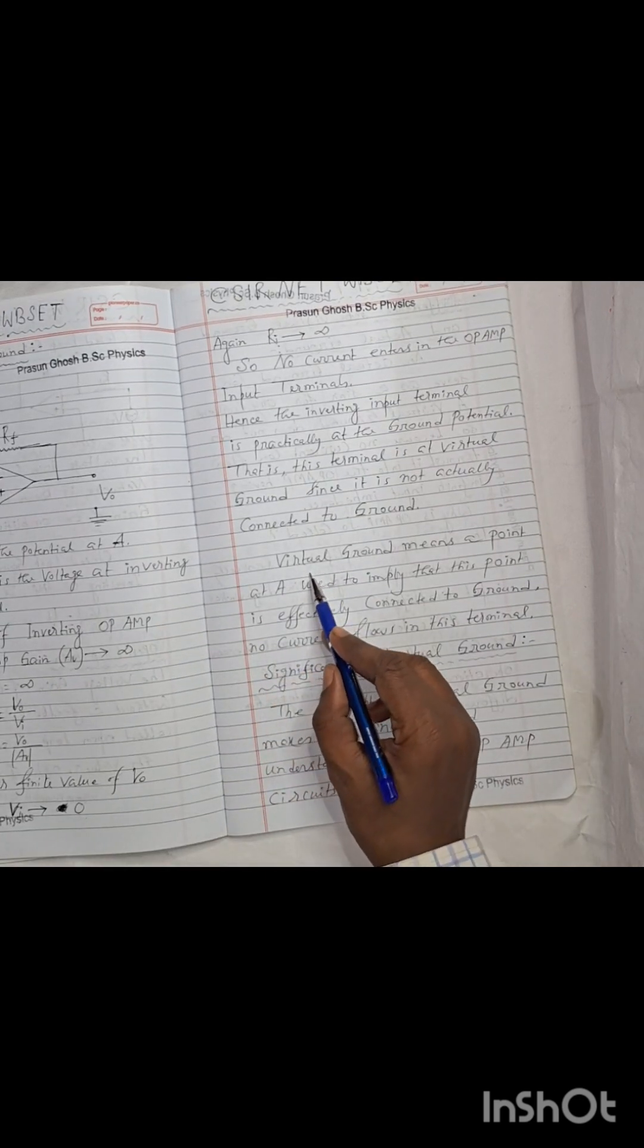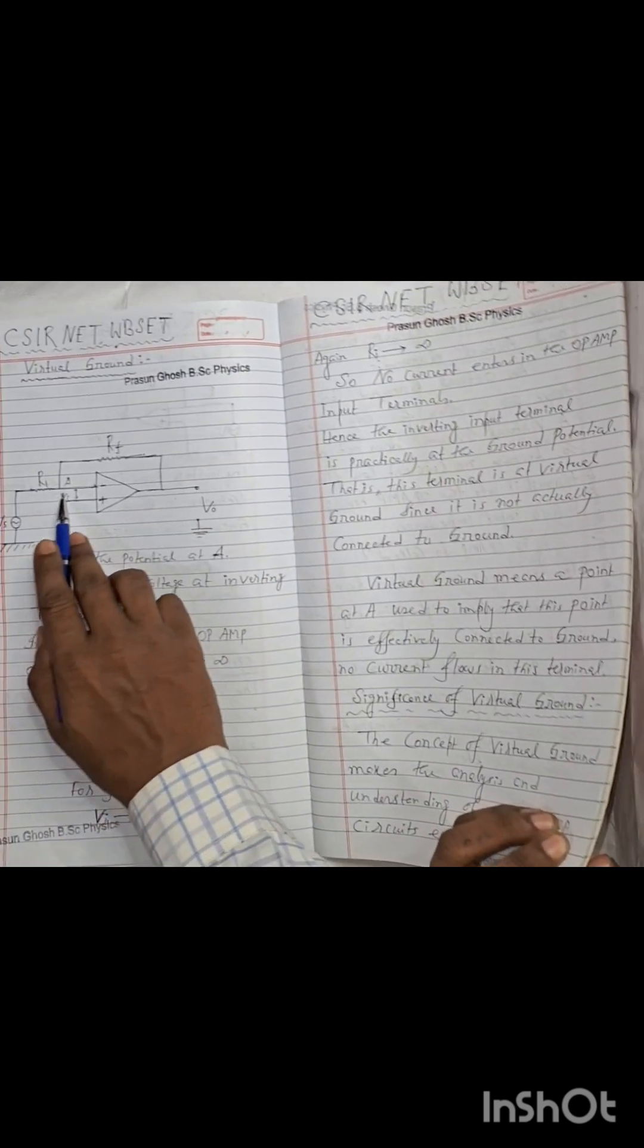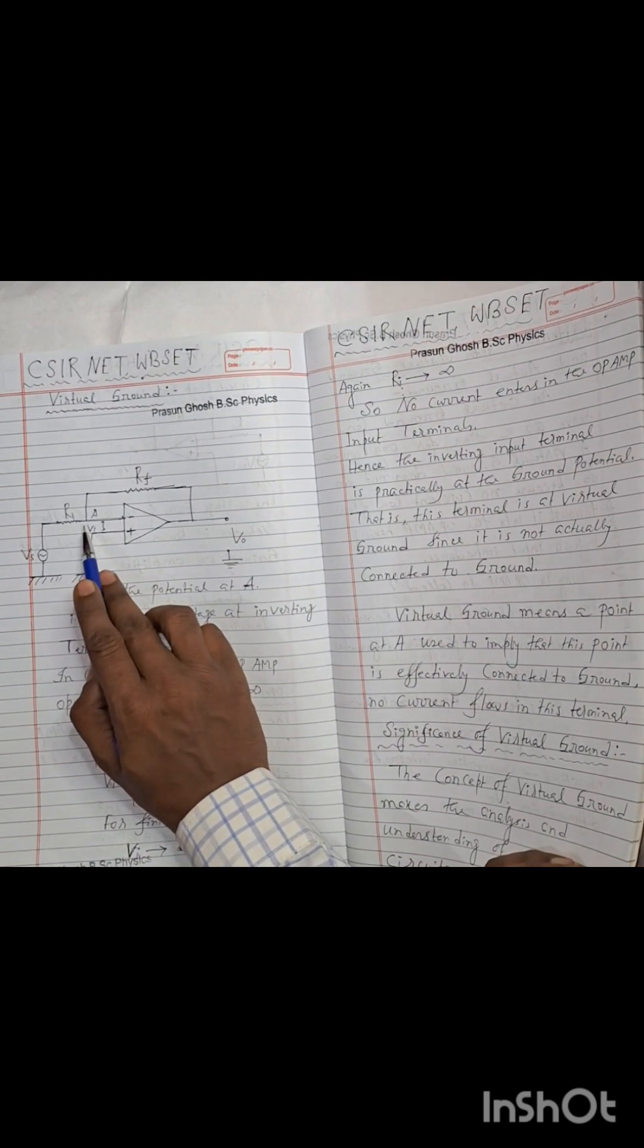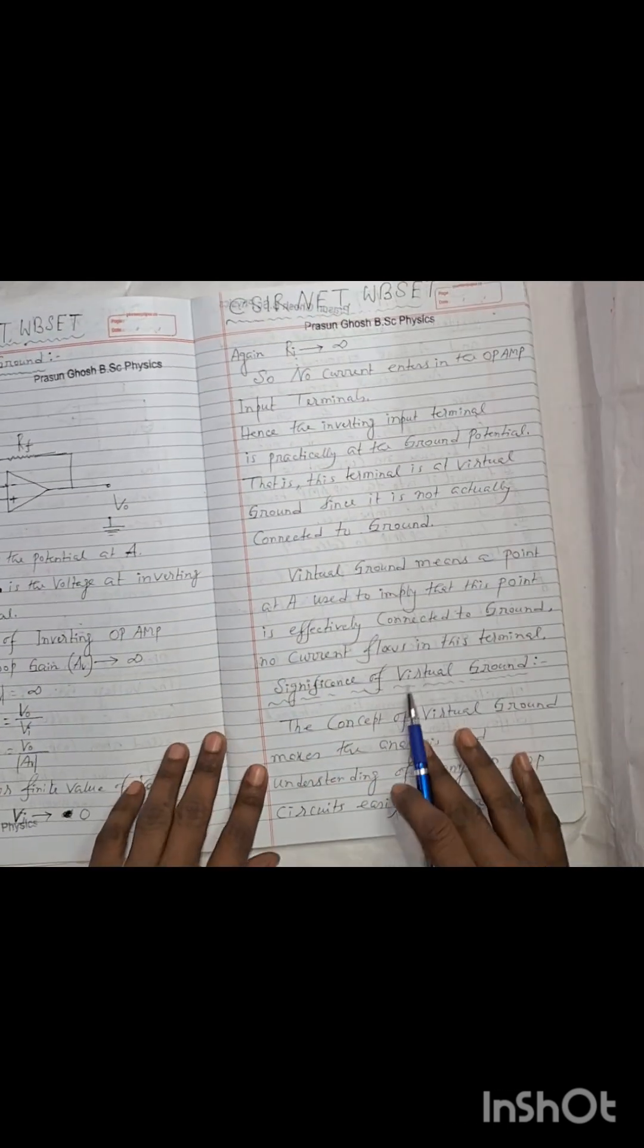We can conclude that virtual ground means a point at A. This point at A implies that this point is effectively connected to ground. No current flows in this terminal. This is the concept of virtual ground.